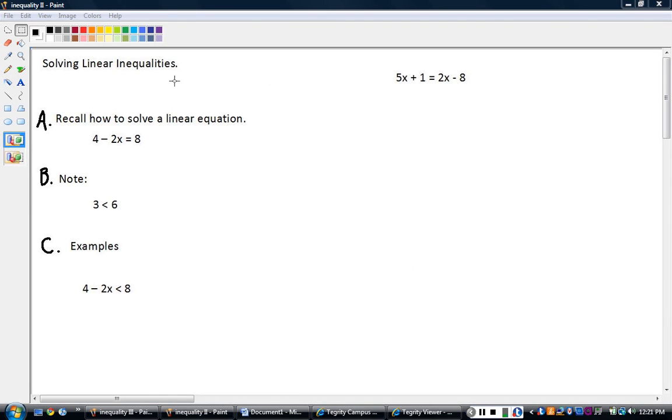Part A here, recall how to solve this linear equation. 4 minus 2x equals 8. We want to isolate x, we want x equals. So let's just remember how to do that because we're going to do a lot of the same things with these inequalities.